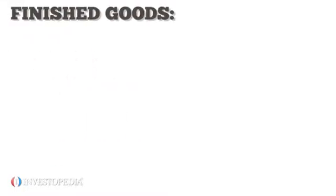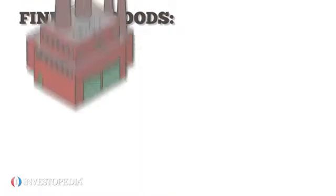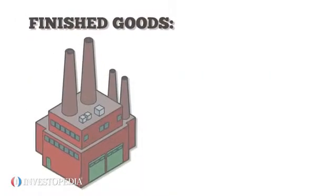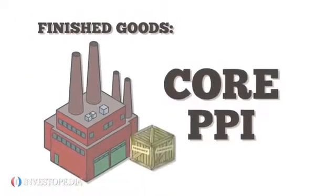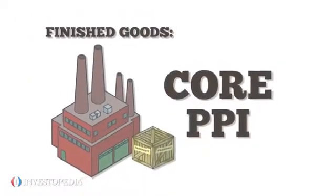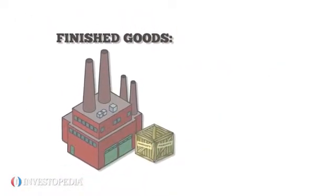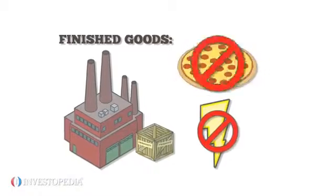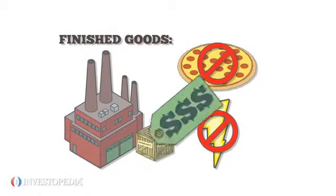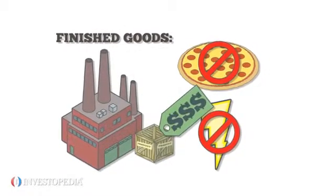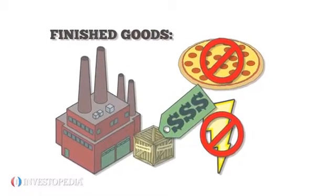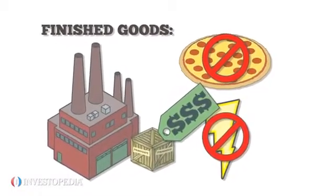Finished goods are in the final stage of manufacturing. This is the core PPI, and it excludes volatile items such as energy and food. Its prices are the closest to those paid by end consumers.